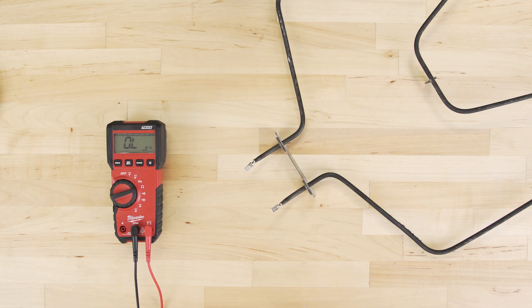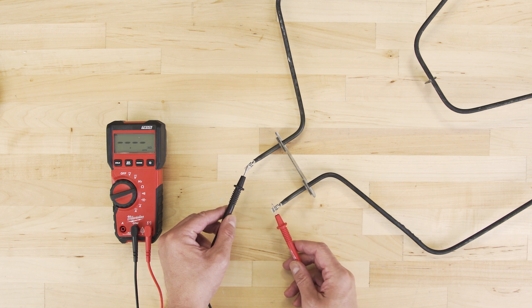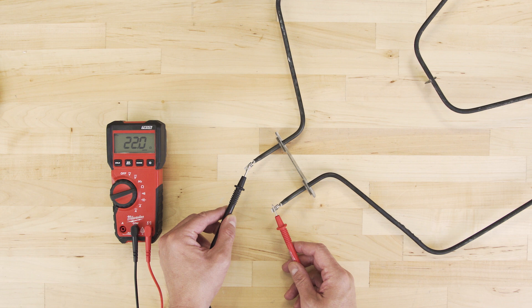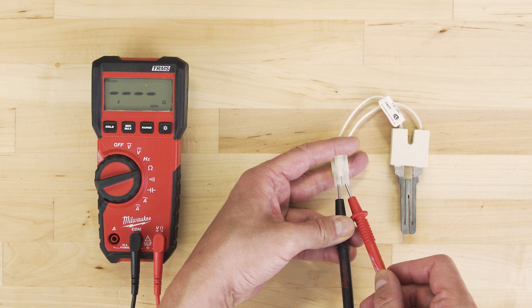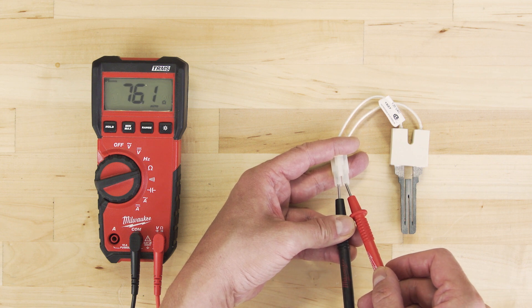As well, heating elements will need a specific resistance to heat properly. For example, oven bake elements commonly have a resistance of 20 to 40 ohms. Whereas, hot surface igniters can range from 30 to 200 ohms.